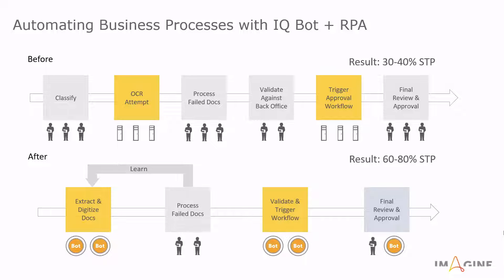With IQBot and RPA, we have automated the extract and digitize steps using cognitive technologies. The majority of that work is done with just RPA and our cognitive services. After training, the bot handles those documents completely on its own. There is a human in the loop for any failed documents, but as they go through the validation process, it uses machine learning to inform the cognitive solution how to process similar errors in the future. So over time, straight-through processing grows and grows.